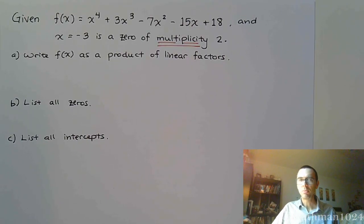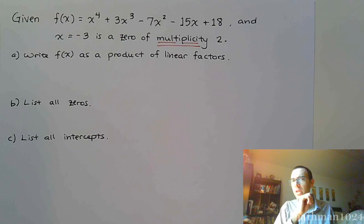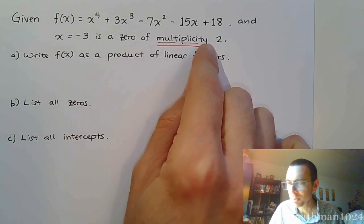In this problem, it's a polynomial of degree four, so we expect there to be four zeros. Typically, they give us some kind of hint, like two factors or two zeros, and we can get down from degree four to degree two. But here, they're only giving us one zero, but they're telling us that it's a zero of multiplicity two.